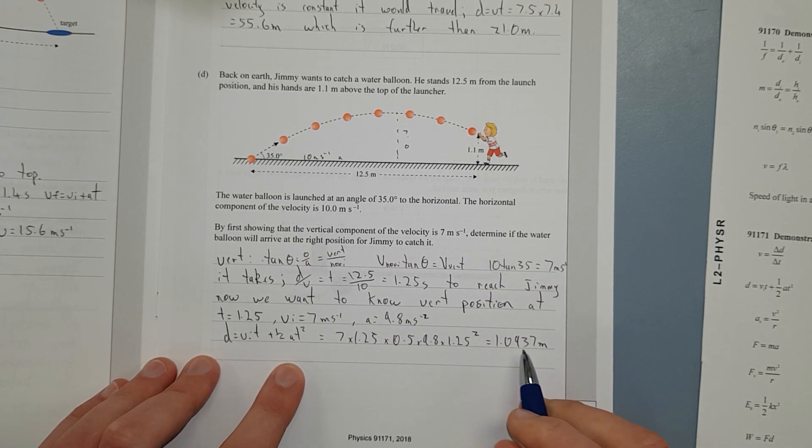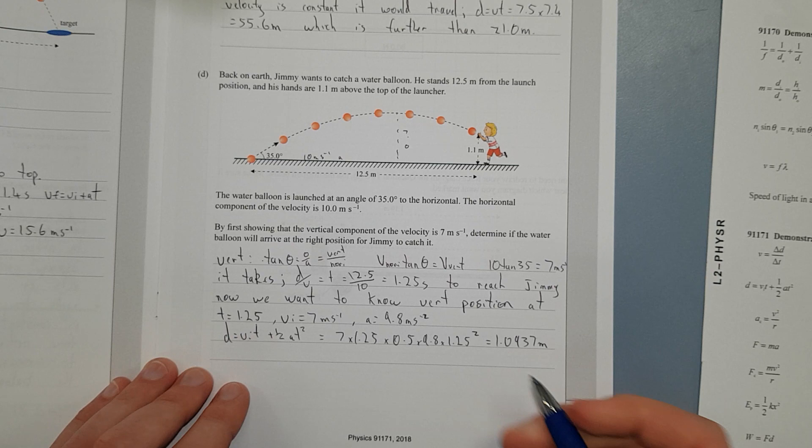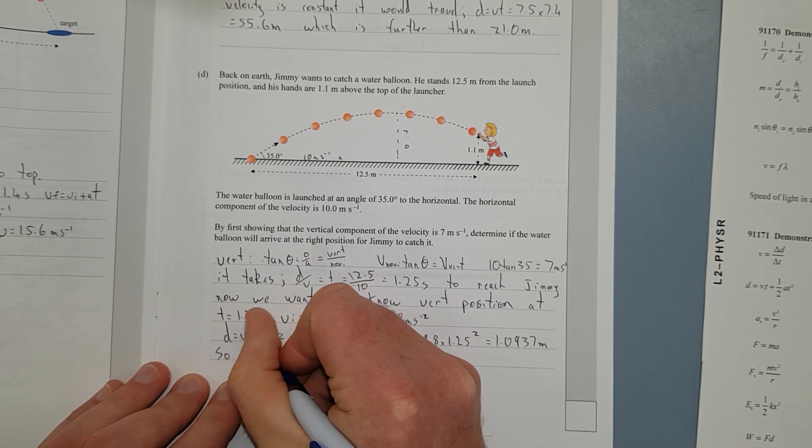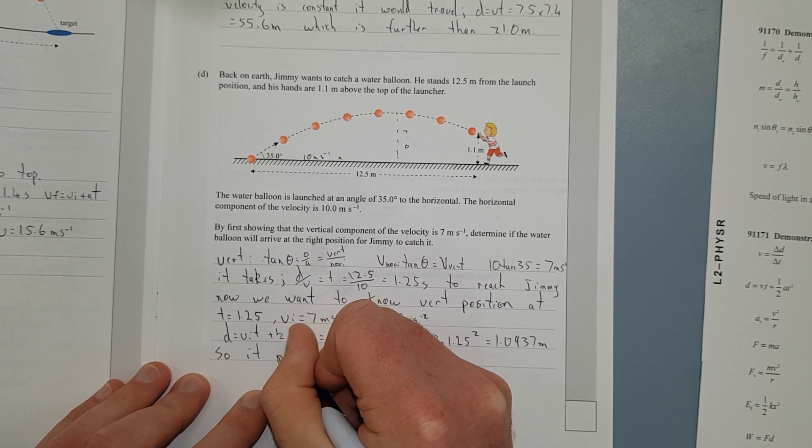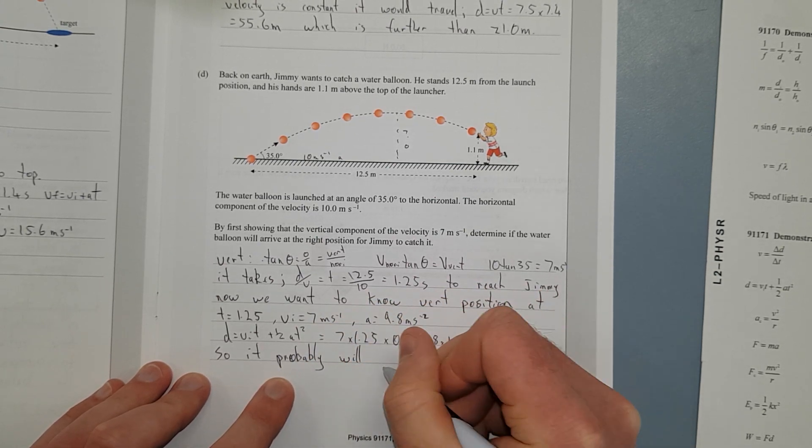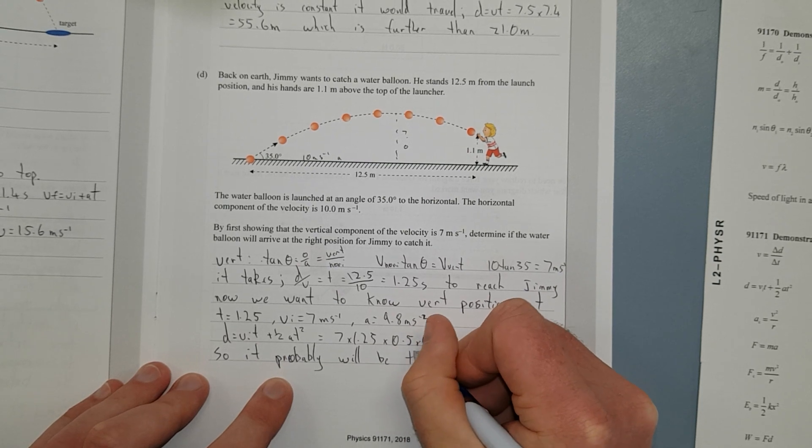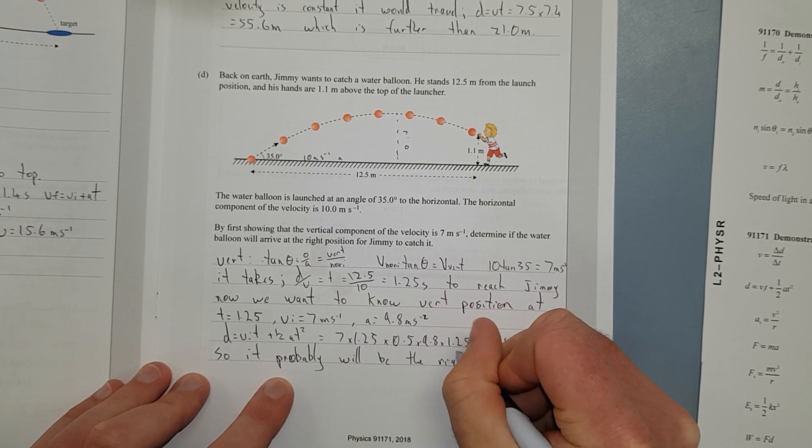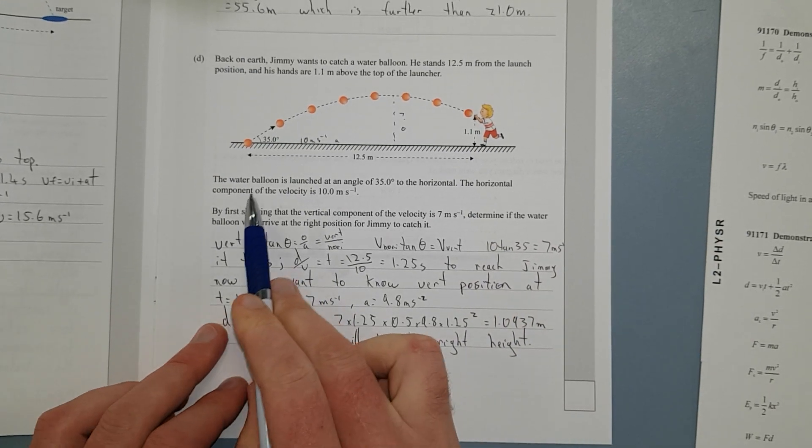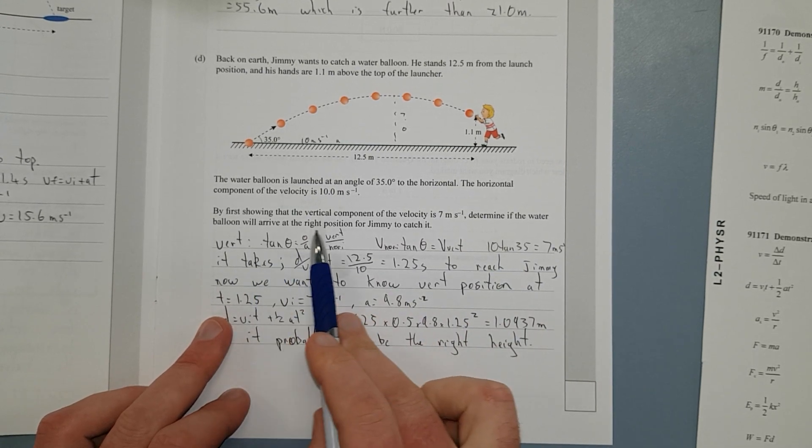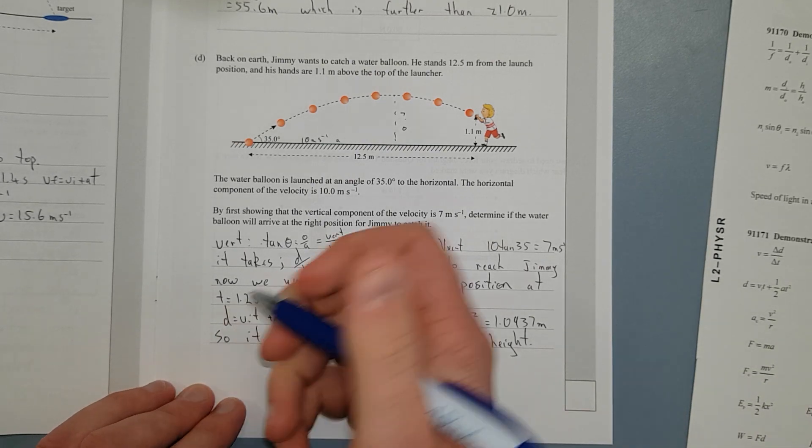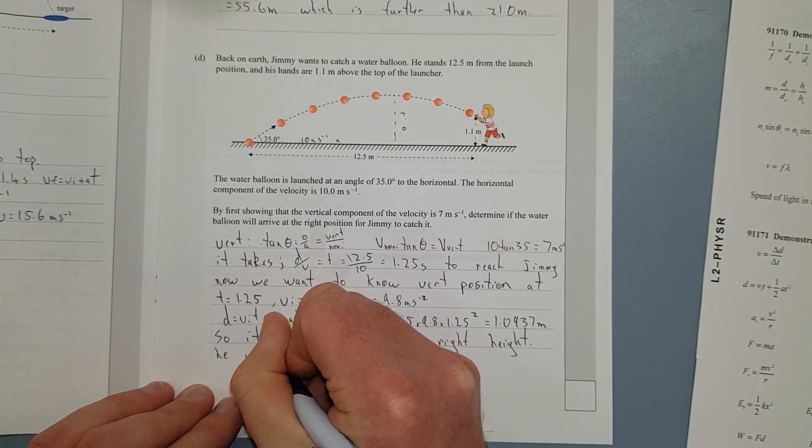So probably he's going to catch it, it's pretty close to 1.1, so we need to actually answer the question. Because it's just a couple millimeters off, it'll probably be at the right height. If you didn't write this, chances are you wouldn't have got the mark, because it's asking us if the water balloon will arrive at the right position, so it'll probably be at the right height. Maybe I'll just put, he will catch it.